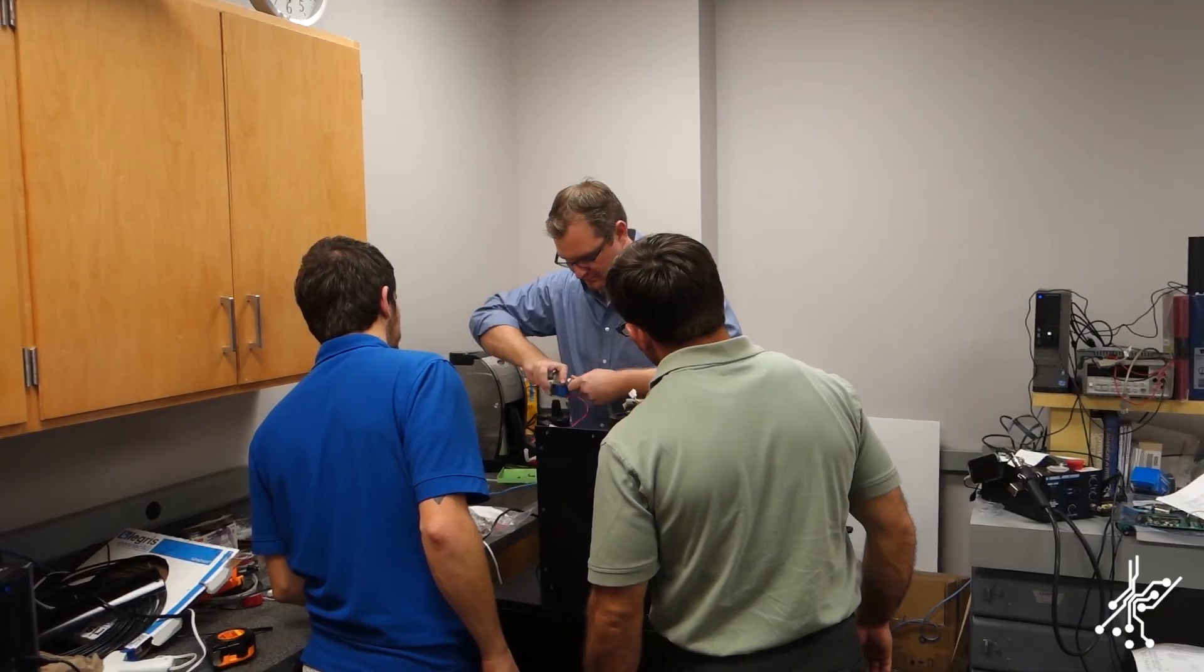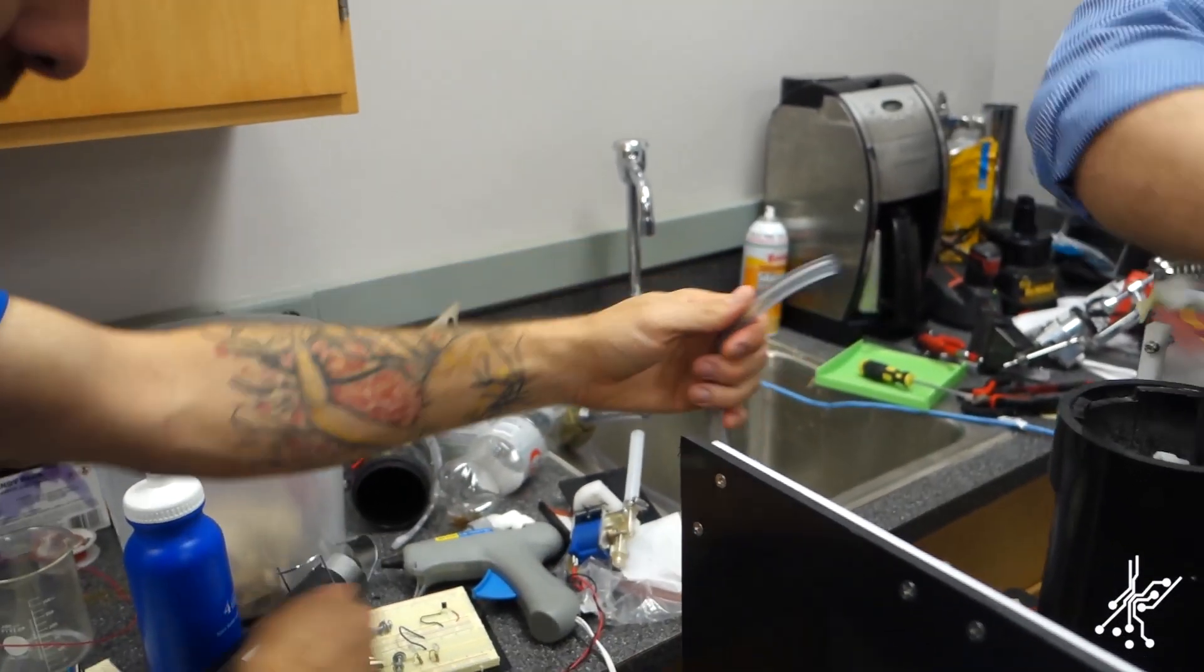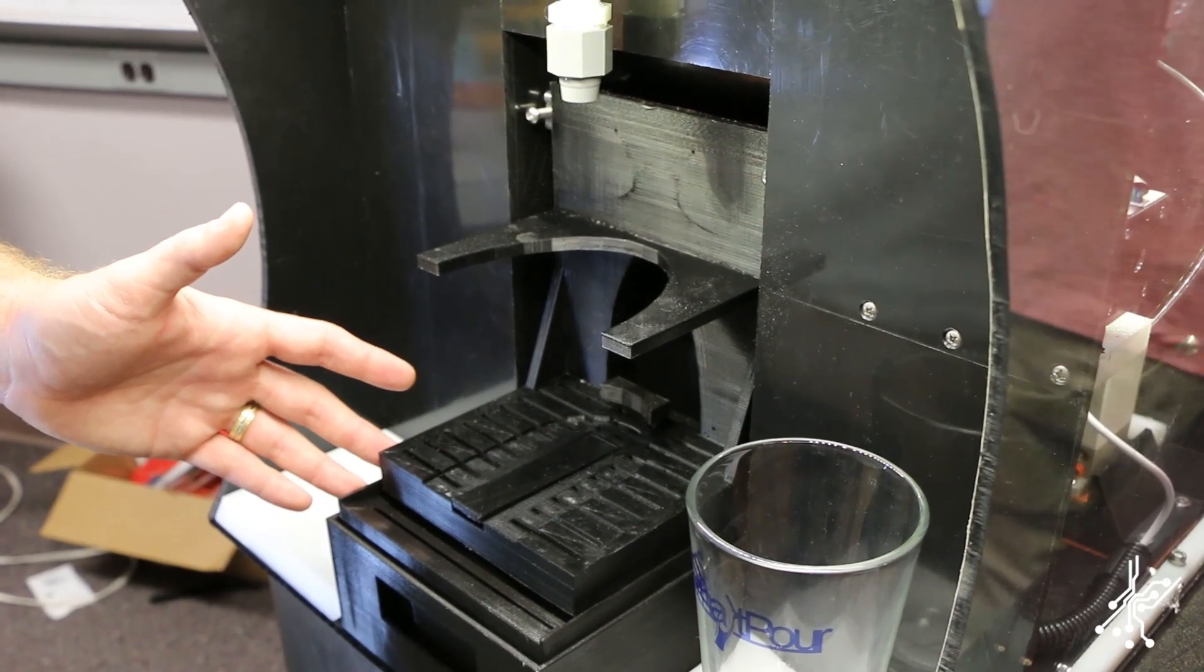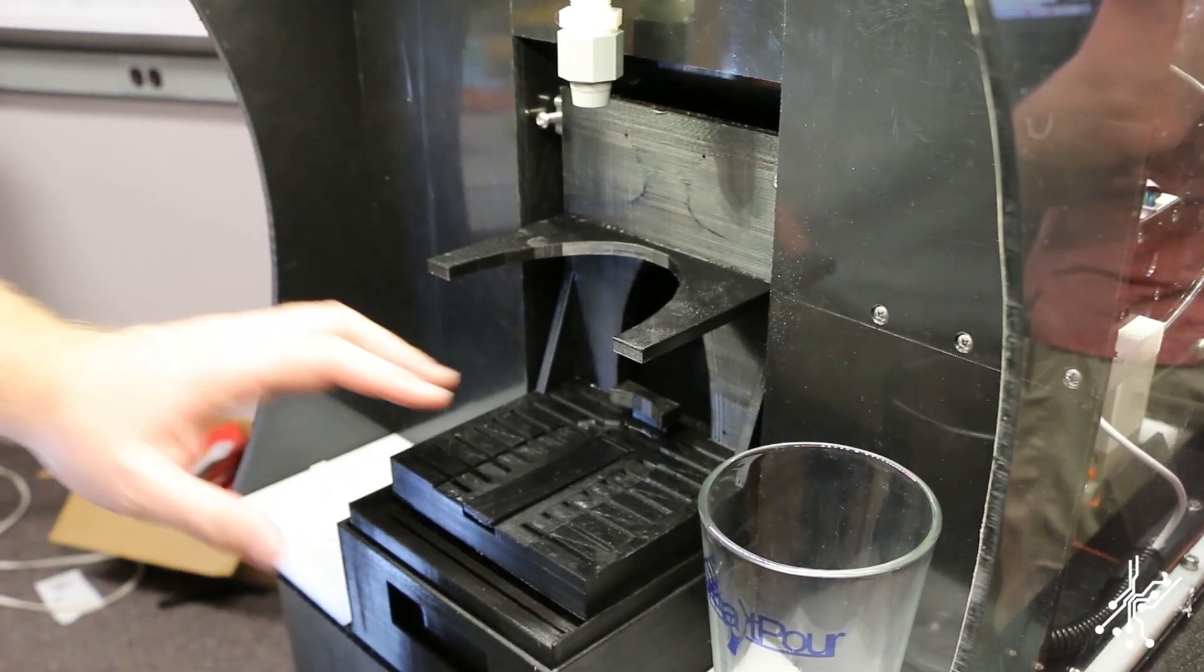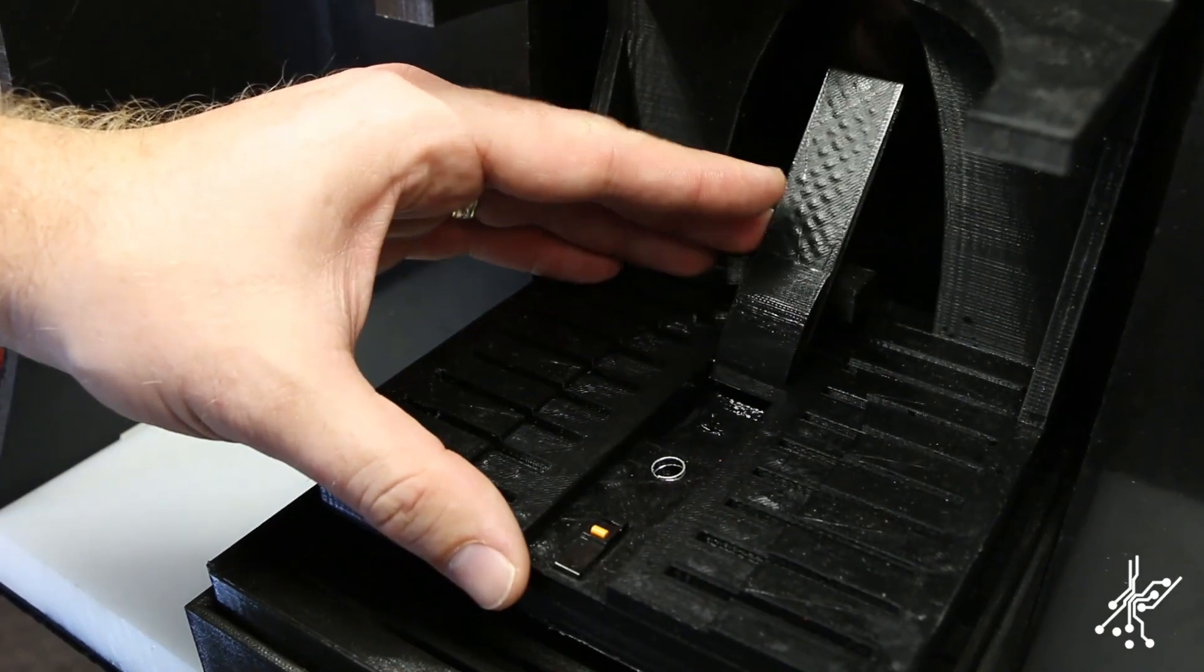Before beginning to dispense beverages, safety issues were addressed. We designed a cradle system with a built-in glass sensor. This sensor halts any operation until a glass is positioned within the cradle.